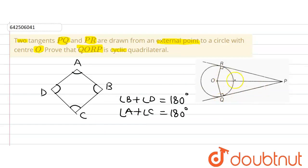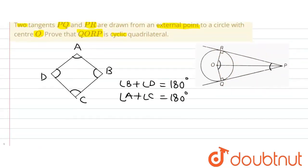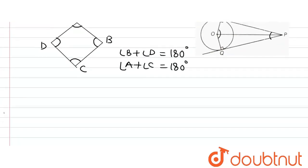So if we want to prove that QORP is a cyclic quadrilateral, what we need to prove is that the sum of angle QOR plus angle QPR equals 180°, and that the sum of angle ORP and angle OQP also equals 180°.